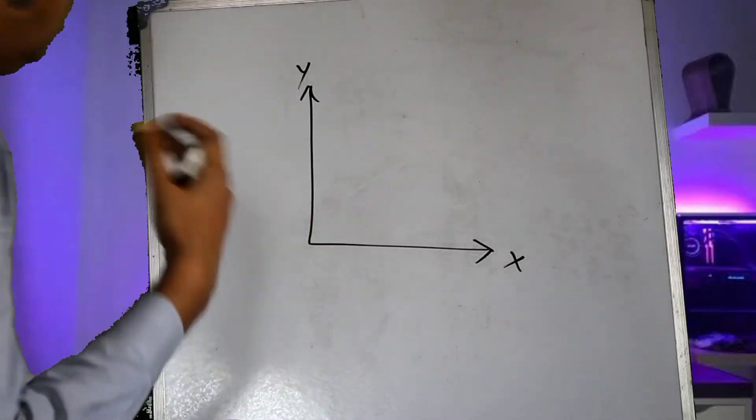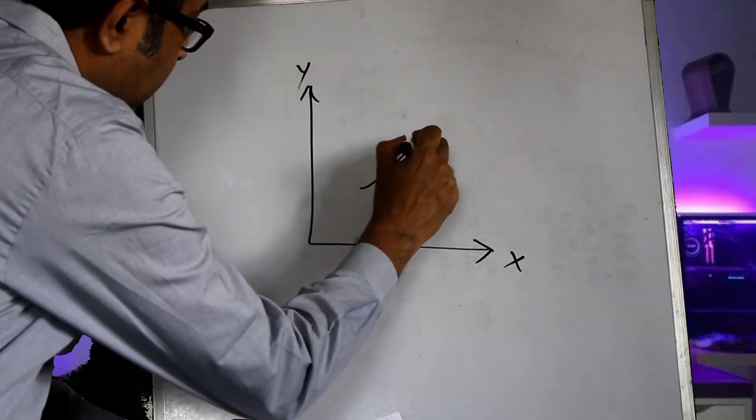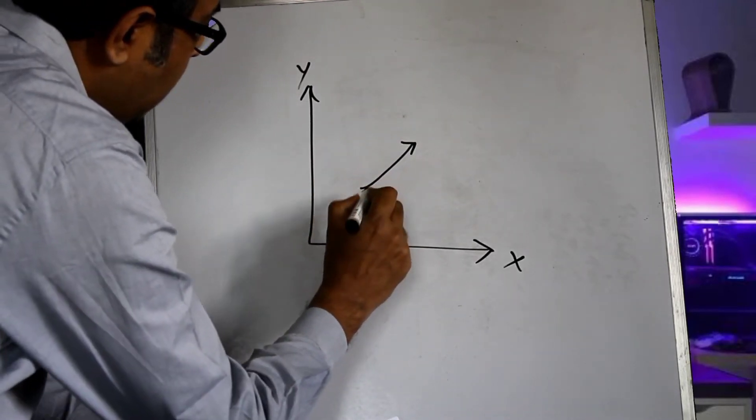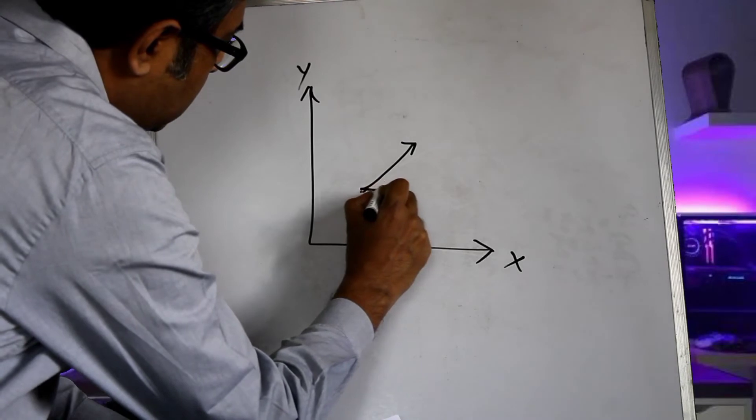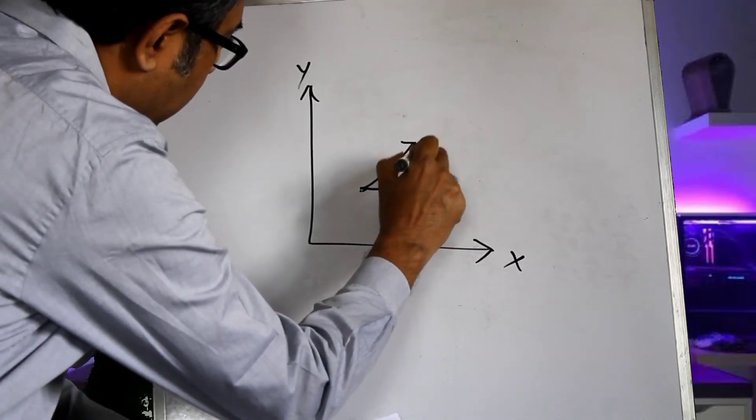For example, if the displacement of the ball in the xy plane is like this, then this displacement is the result of the component motion in the x direction and in the y direction.